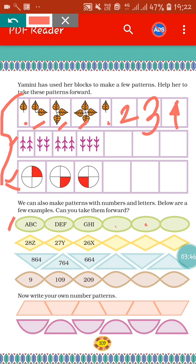In the second one, it is written 28Z, next one 27Y, next one 26X. So what will be the next one? The next one will be 25W. In this way, you have to carry forward the pattern. Similarly, in the third one, it is written 864, and the next one 764, next one 664. So the next one will be 564.